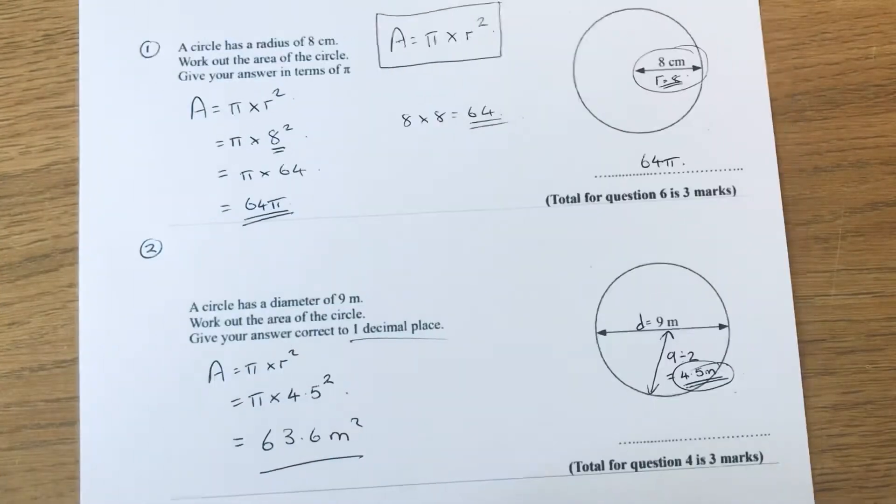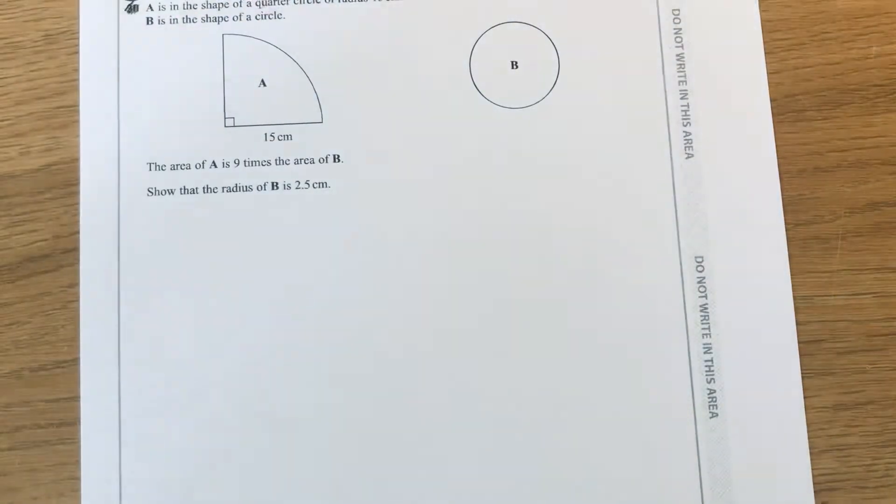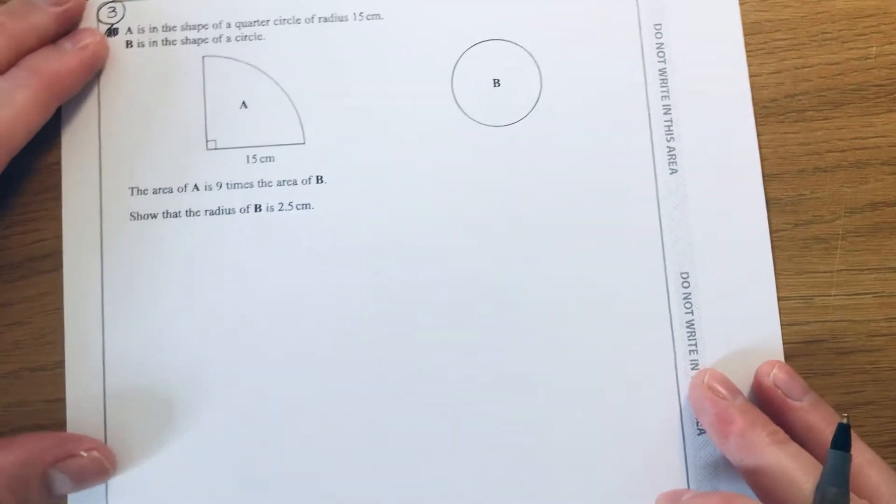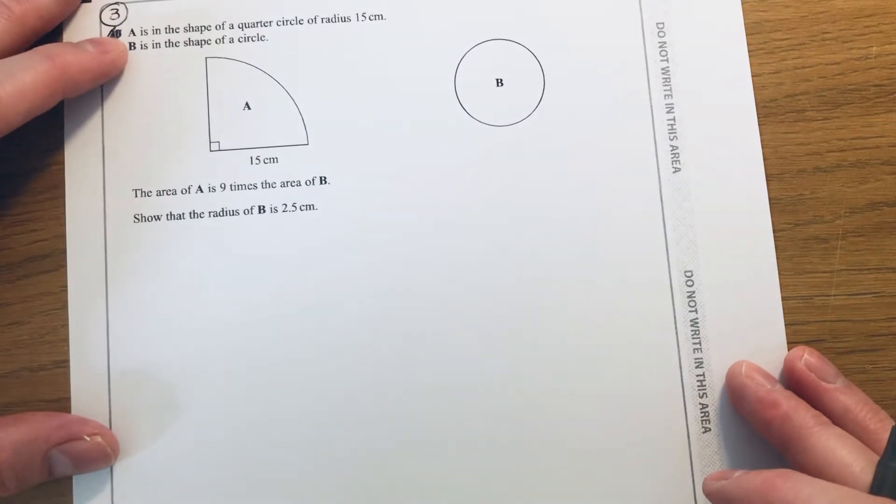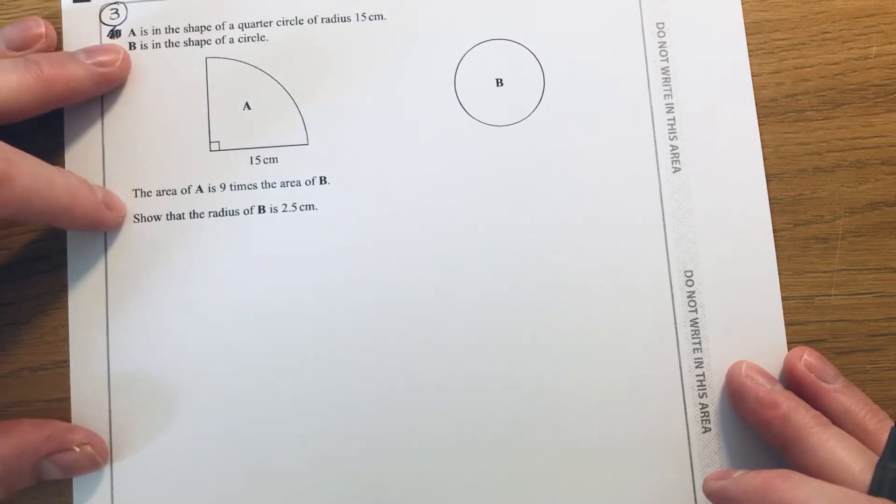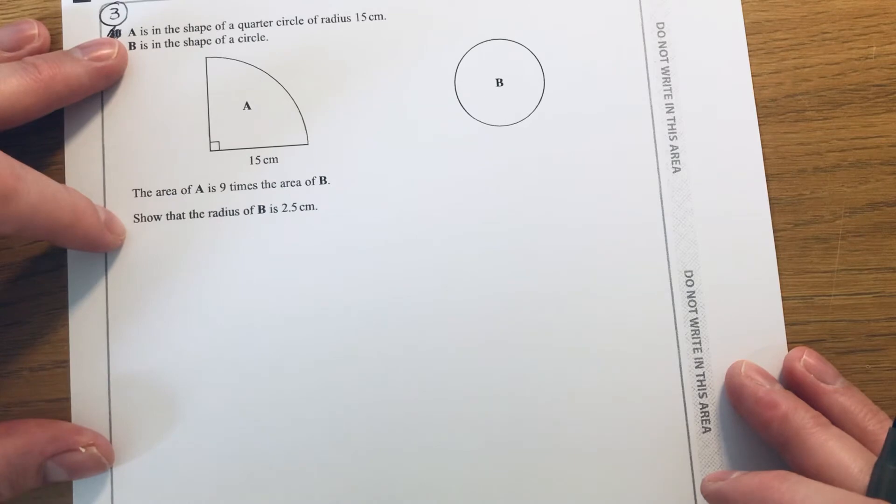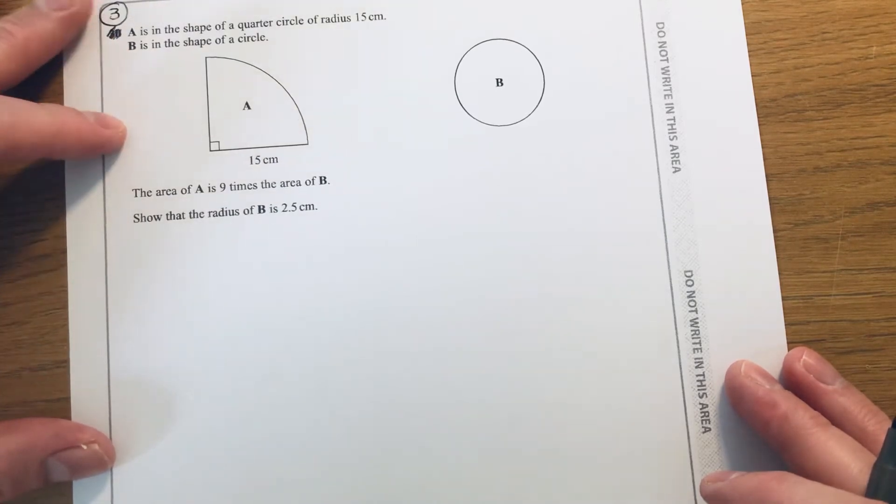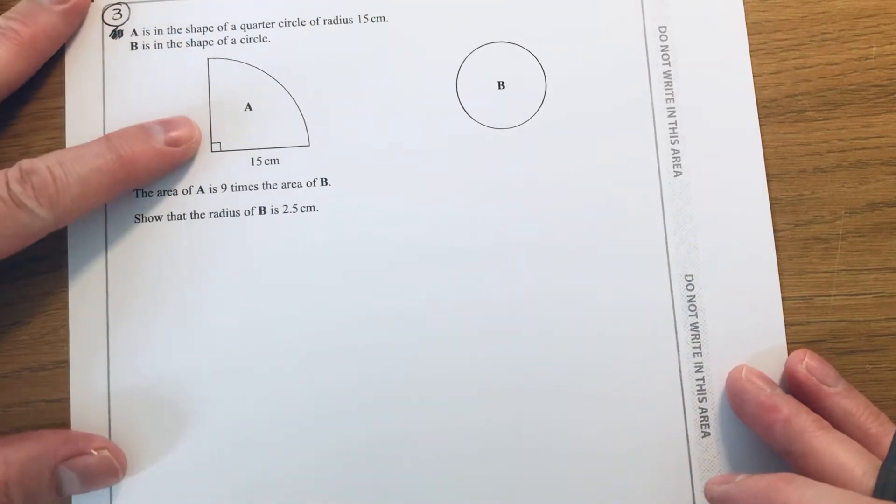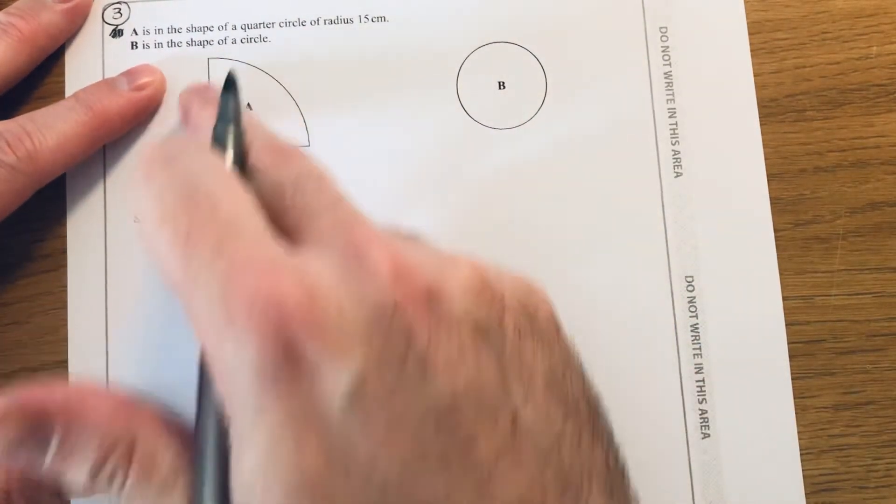Let's move on to our third and final question. This one's a little bit harder to do. So A is the shape of a quarter circle of radius 15 centimeters. B is the shape of a circle. The area of A is 9 times the area of B. Show that the radius of B is 2.5 centimeters.